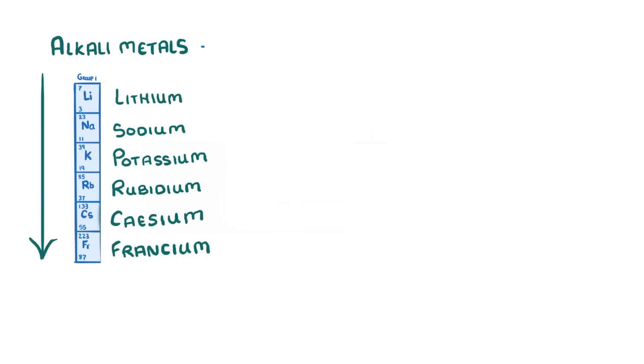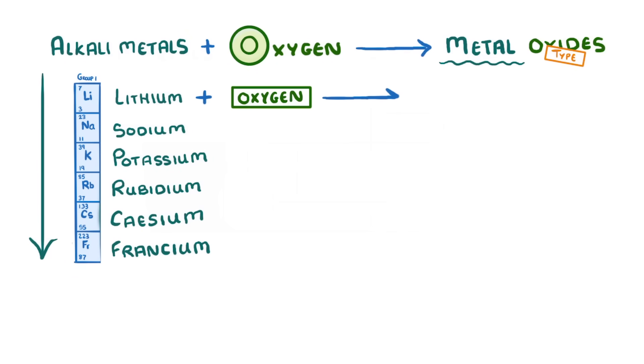When alkali metals react with oxygen, they form metal oxides. However, the type of oxide they form will depend on the particular metal. For example, lithium plus oxygen forms lithium oxide, Li2O.